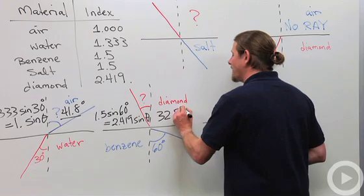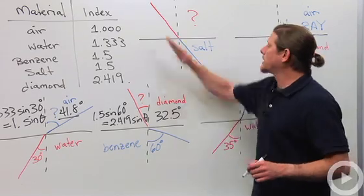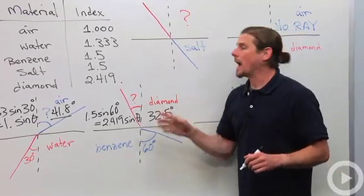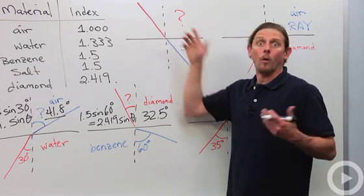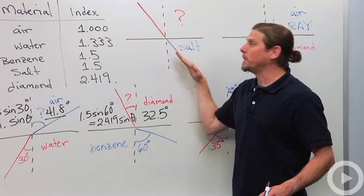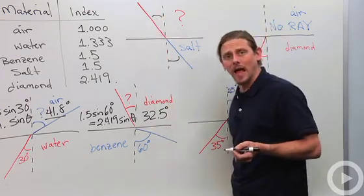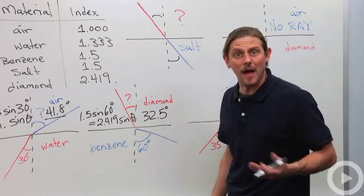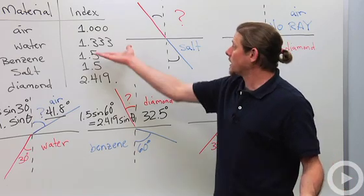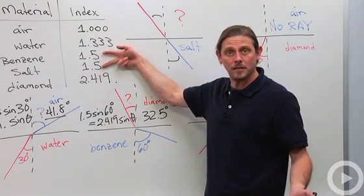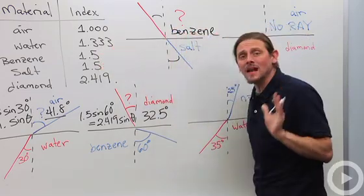Let's do a more qualitative one. Suppose that I'm given a diagram like this and I know that this material is salt, and I want to know what could this material be. Well, let's look at it. It doesn't look like it bent at all, so that means that the angle of incidence is the same as the angle of refraction. Snell's law indicates that means the speed's got to be the same, so the index has to be the same. I look at my table and I see that the guy that has the same index of refraction as salt is benzene. Not difficult to do, but if you don't know what you're doing it can be confusing.